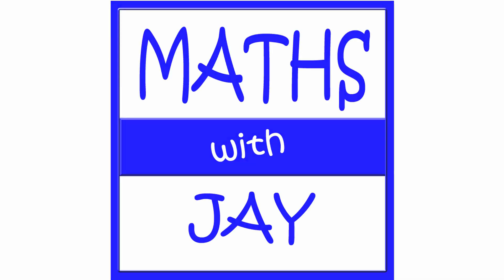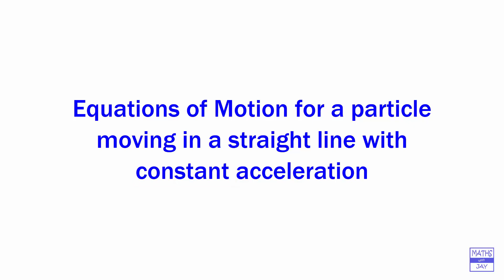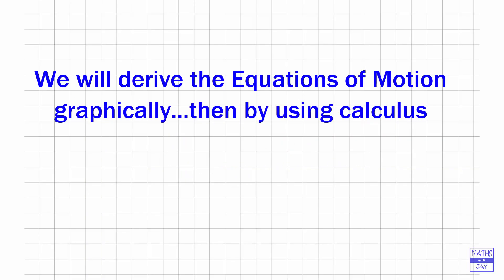Hello, welcome to Maths with Jay. In this video we're going to derive the equations of motion for a particle moving in a straight line with constant acceleration — it's really important that the acceleration is constant. We're not going to work through any examples; we're just concentrating on deriving the equations. There are two ways of looking at this: using graphs or using calculus. We'll start with the graph method and then look at calculus.